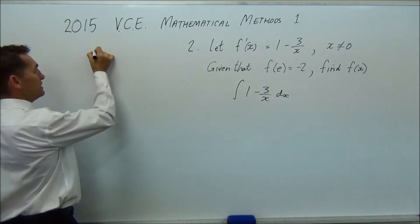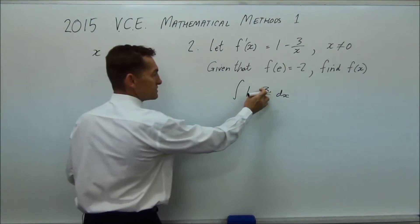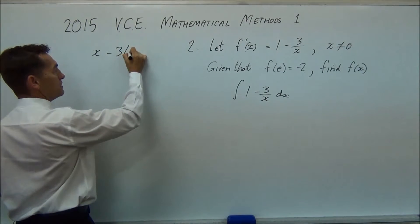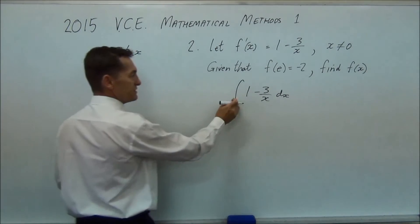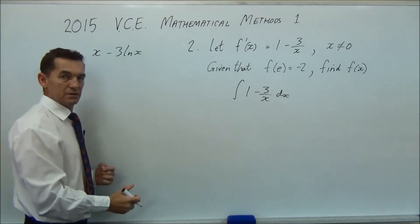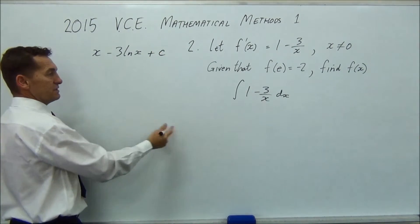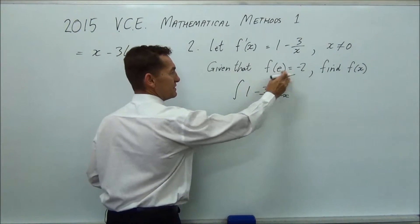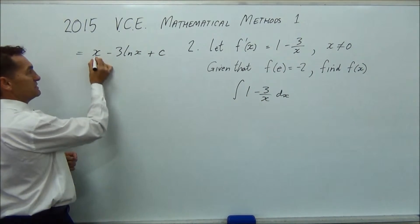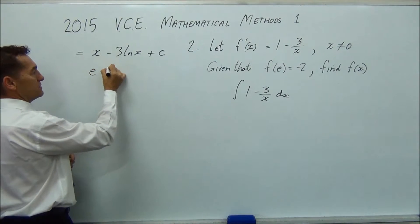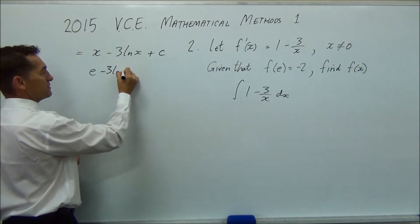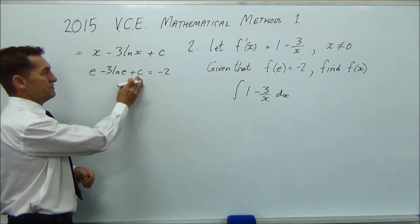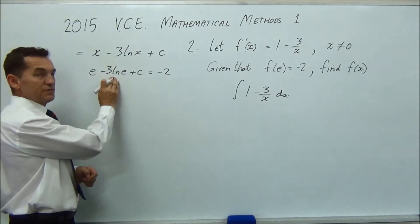If you integrate 3 over x, you get 3 multiplied by log x. There's no numbers there or there. So you have to add c. So if we integrate that, we get that. Now it tells us put in e and make it equal to minus 2. So let's put e in. So we get e minus 3 log e plus c equals minus 2. We want to find out what c is. So we're going to put all of that over that side. But first,